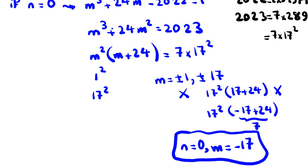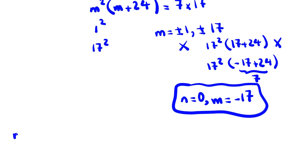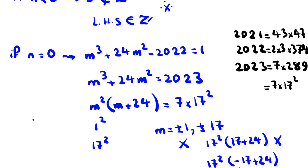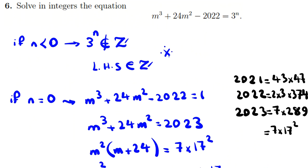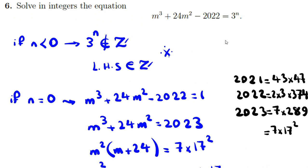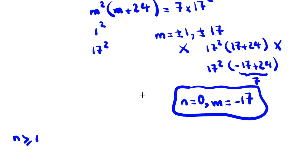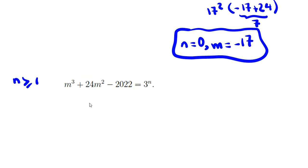We've now handled n < 0 and n = 0. Next we consider n ≥ 1, so let's copy the first equation and see what we can do in the cases where n is positive.